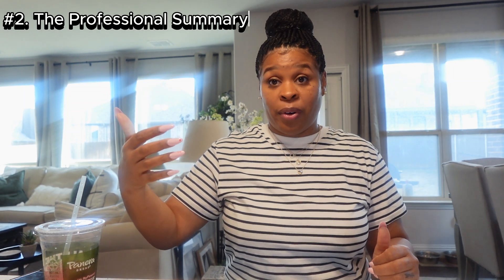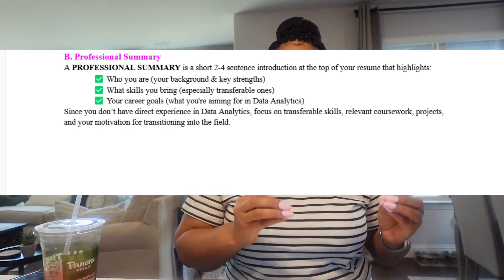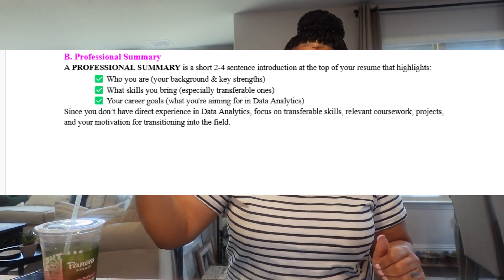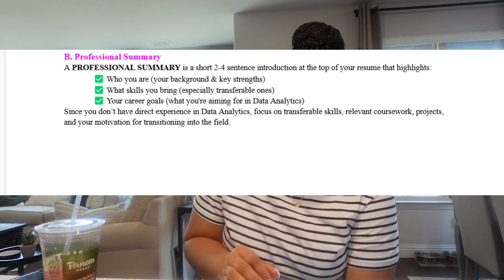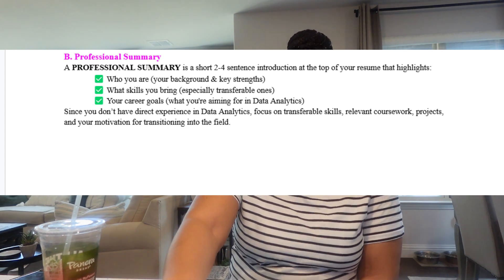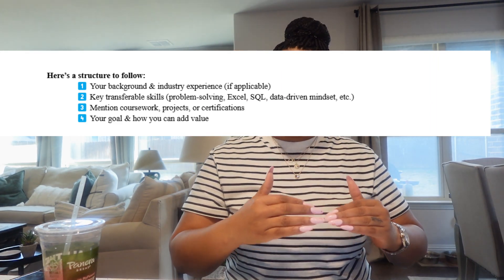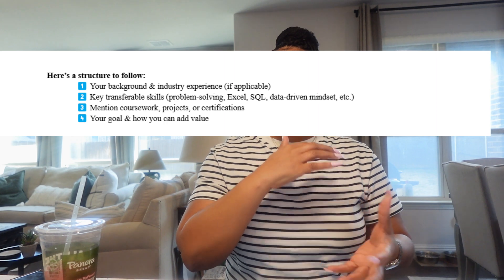Right after the header is going to be your professional summary. Your professional summary needs to be very short — anywhere between two to four sentences — an introduction at the top of your resume that highlights who you are, what skills you bring, and your career goals. Since you don't have direct experience in data analytics, focus on transferable skills, relevant coursework, projects, and your motivation for transitioning into the field. Structure it as: background, transferable skills, mention of coursework and certifications, then your goals.